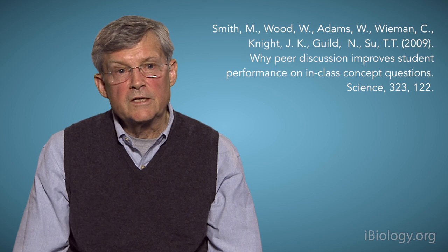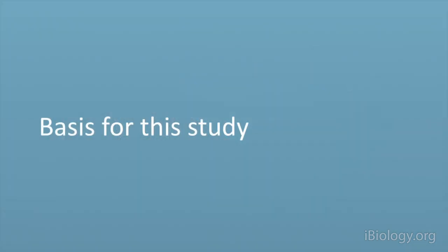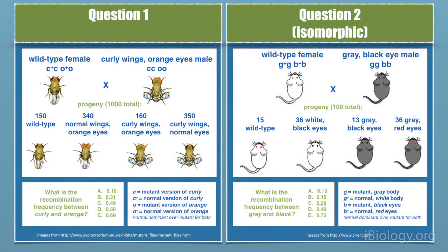Michelle and Tintin dreamed up an experiment to test that. The basis for their study was to develop pairs of questions that were isomorphic, which means that it's testing the same concept but in a different context. For example, you could have a genetics question first with fruit flies and then with mice.